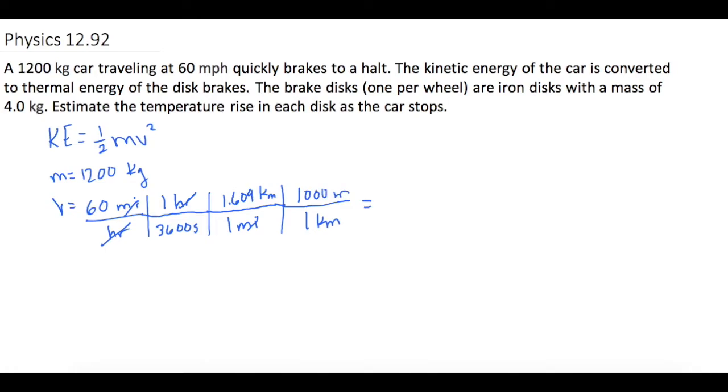So we take 60 divided by 3600, multiply that by 1.609, and then times that by 1,000, and we get 26.8167 meters per second.